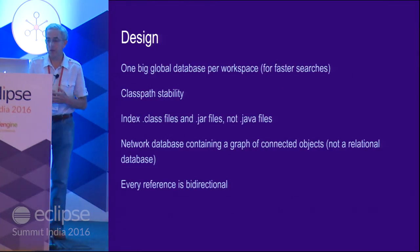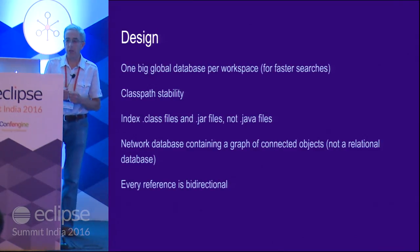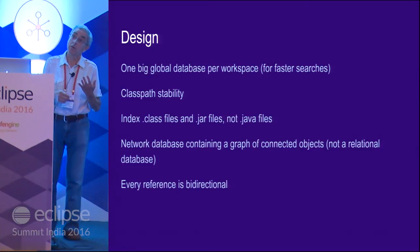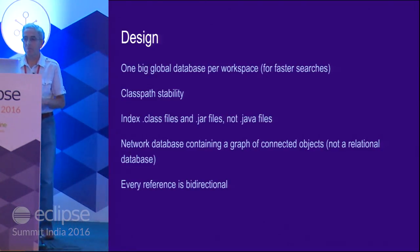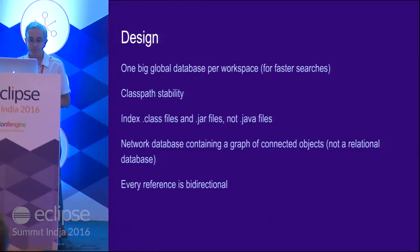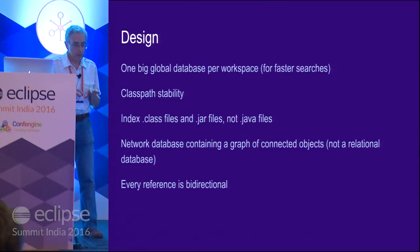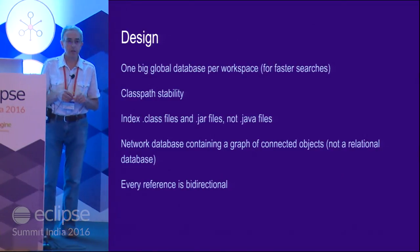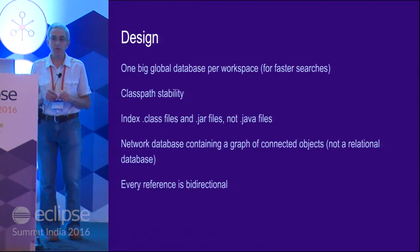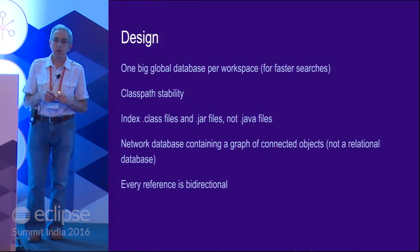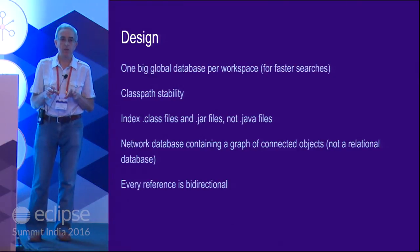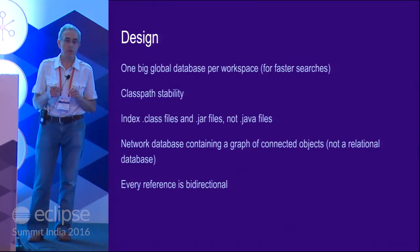The database we are using, like in CDT, is a network database — not a relational database. We are not using any SQL to access it. Network databases were popular maybe 25 years ago, then got into the shadows, but it's still a useful and very simple technology. What the database contains is a graph of interconnected objects, and we want every reference to be bidirectional. The reason for bidirectional references is that in CDT we don't have that, and we learned the lesson: when you don't have fully bidirectional references, deleting something with a large number of incoming references becomes a very expensive operation.